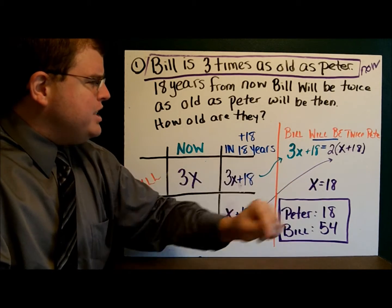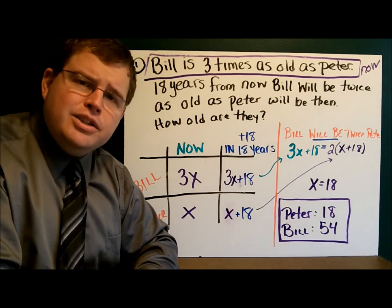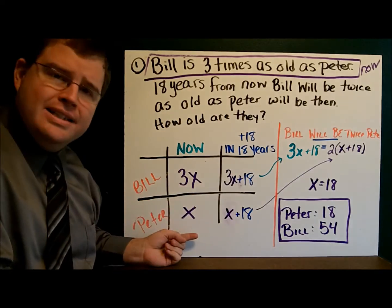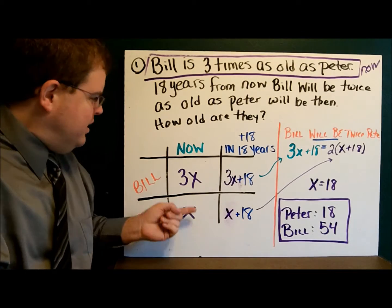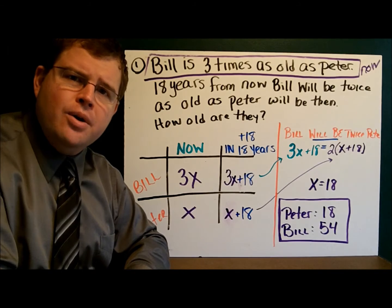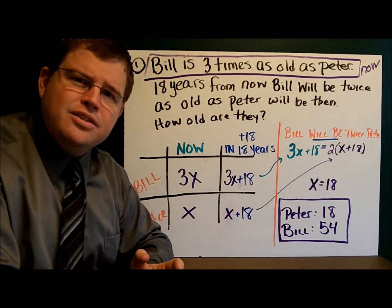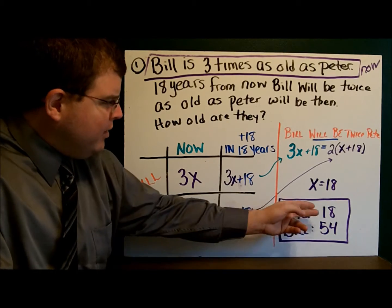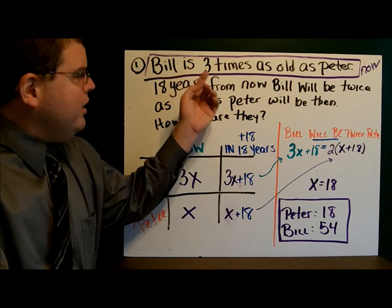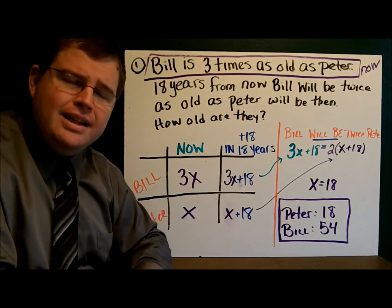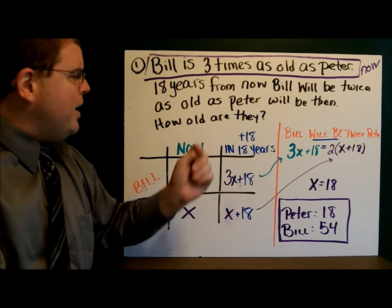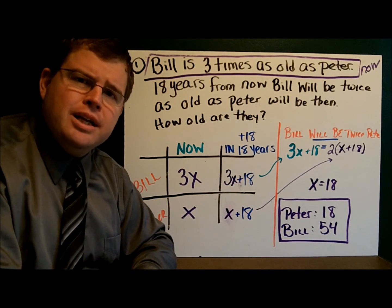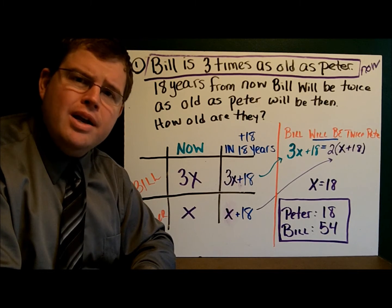If we go through and solve the equation, we find that X equals 18. We've got to make sure we answer the question: how old are they now? Peter is X, so Peter is 18 years old. Bill is 3 times X, so Bill is 54 years old. The last thing I always do is ask myself: does the answer make sense? Bill is 3 times 18 — that looks good. In 18 years, Bill will be twice as old as Peter — yes, that checks out.